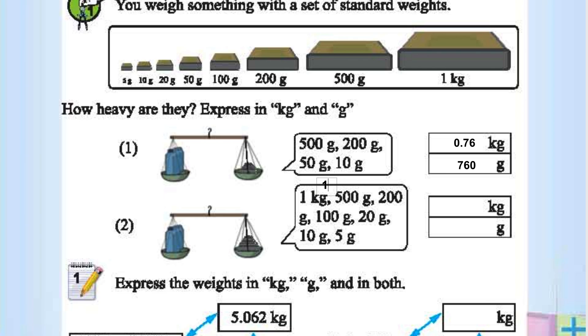It is 1 kg 835 grams or 1.835 kg. In grams, 1,835 grams.